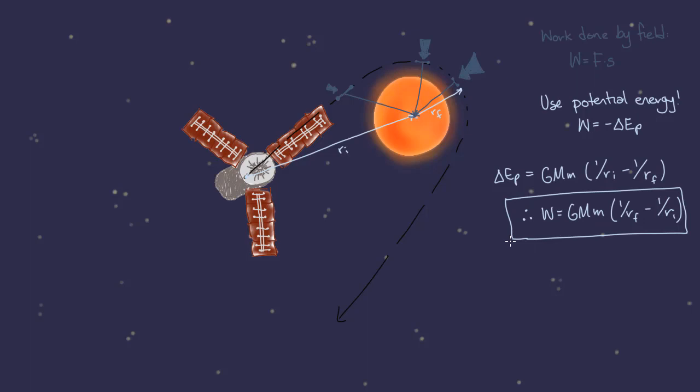So, without needing to worry about the initial velocity, or the strength of the field at all these points, or the direction of the field, we were able to look at the change in potential energy and figure out how much work the field did on the object, moving it from the initial position to the turning point.